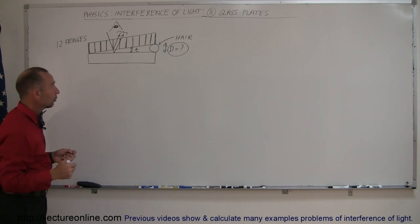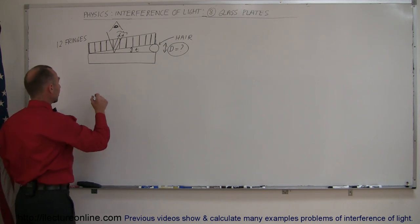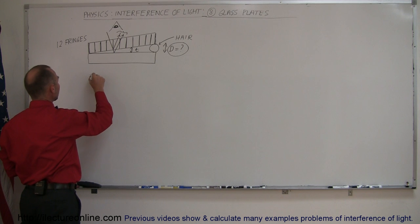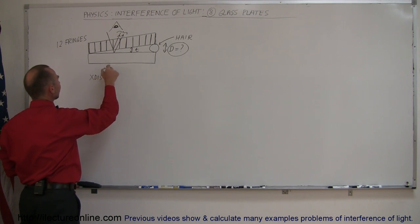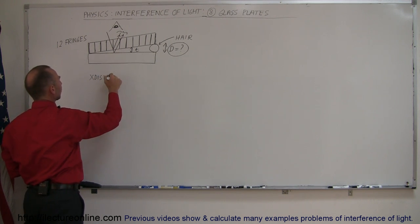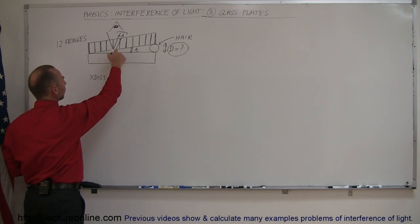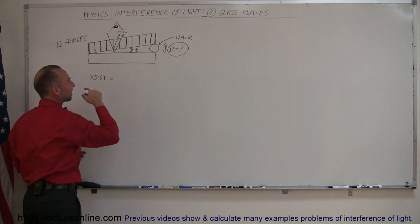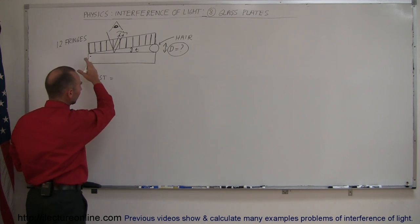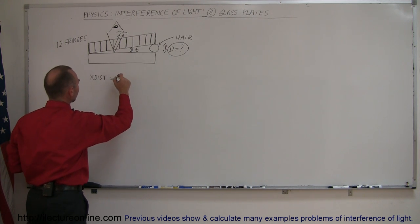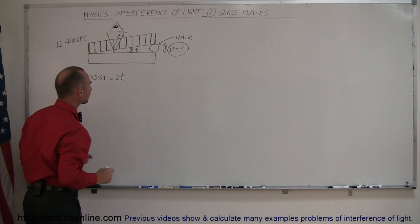What we're going to do here is say that the extra distance traveled by the second ray compared to the first ray is always going to be twice the thickness between the two plates. Of course, that thickness gets wider as we go along.